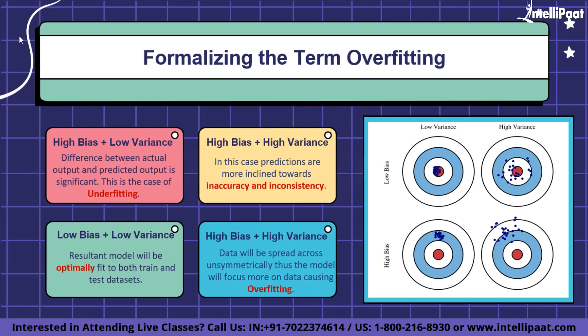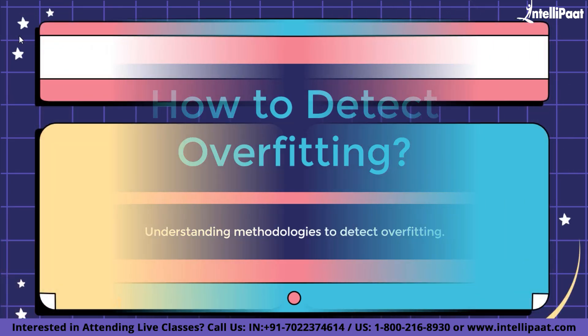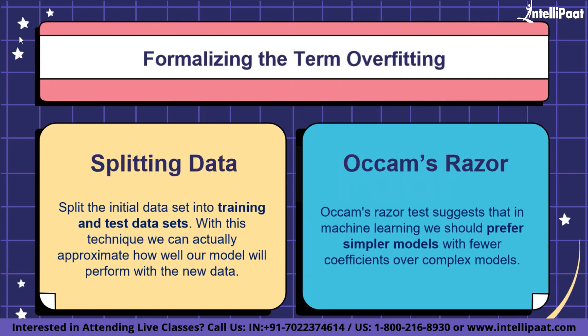Now that we understand overfitting, let's contemplate how to detect it in a machine learning model. The main challenge is estimating the accuracy of the model's performance on new data. To address this, we can split the initial dataset into training and test data sets. For example, if we have 85% accuracy on the training set and only 50% on the test set, that is automatically a red flag — the model is not efficient enough and shows different accuracy levels when exposed to different data.